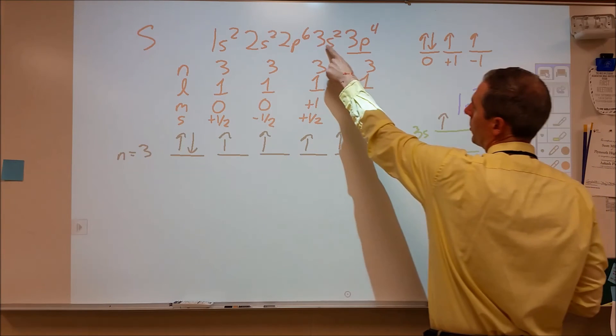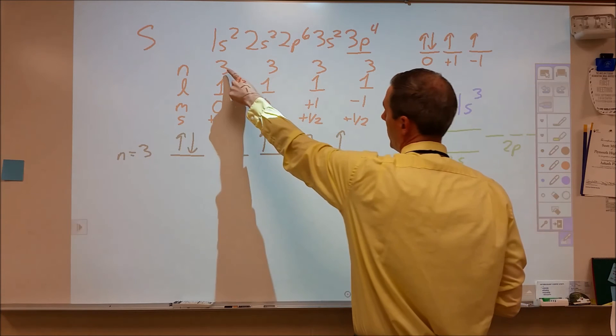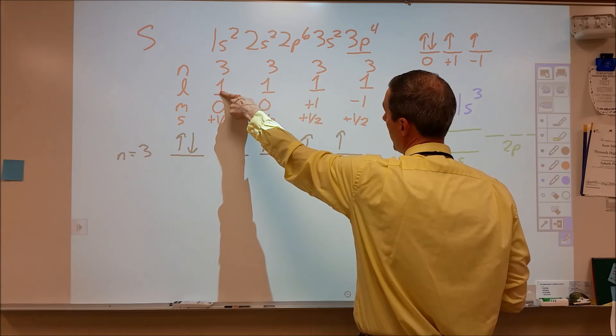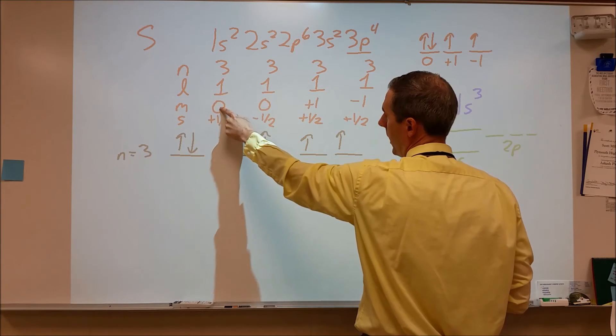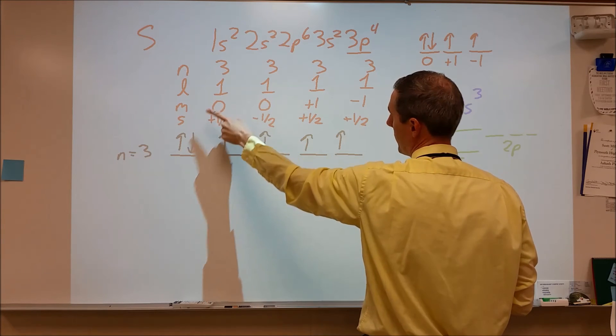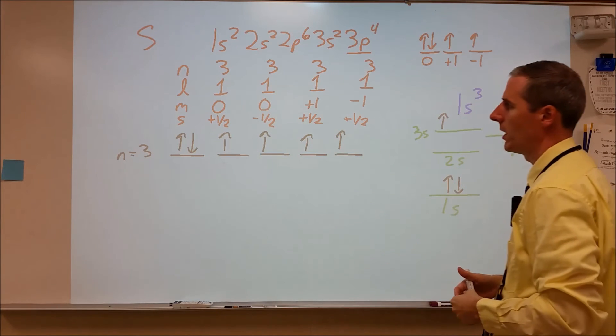Now, if I were to go through and say, well, what about the 3s? Well, for those, n would still be three. l would now be zero because it's an s orbital. m would have to be zero. We'd have no option. And the spin would either be plus or minus one half.